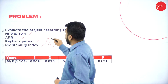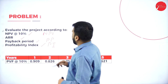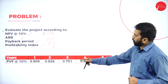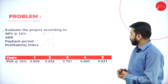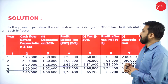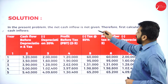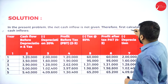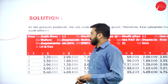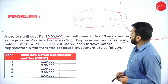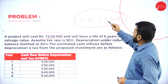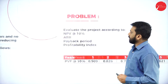Today's session covers payback period and net present value. The discount rate is 10 percent — all calculations are based on 10 percent. In this problem, the net cash flow is not given, so first we calculate the cash inflow: cash flow minus depreciation, minus tax, plus depreciation back, gives you the actual cash flow.